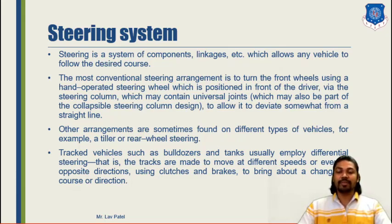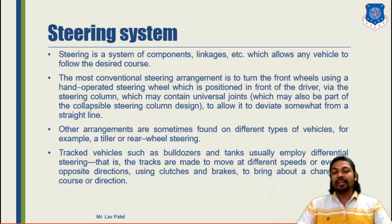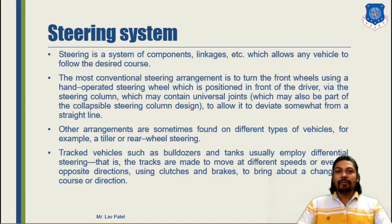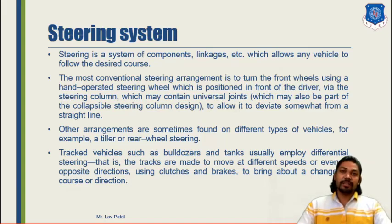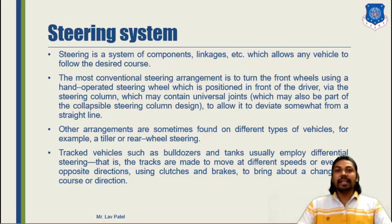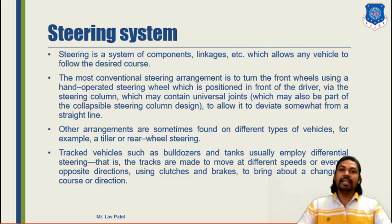From the steering wheel to the final front wheels, there are several universal joints, linkages, and gears provided to easily turn the wheels with the driver's effort. Other steering elements are sometimes found on different vehicle types, such as a tiller or rear wheel steering. In special purpose vehicles, rear wheel steering systems are used because the vehicle's design requires it to perform tasks and activities as per requirement and convenience.